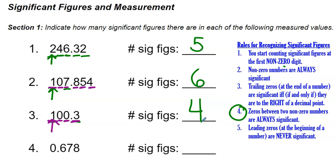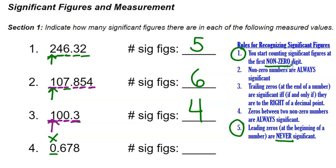Number four has a zero at the beginning — a leading zero — so instead of rule four, we use rule five. Leading zeros at the beginning of a number are never significant. We can also apply rule one: we start counting at the first non-zero number and skip that leading zero. The first non-zero number is the six. Counting from there: one, two, three significant figures.